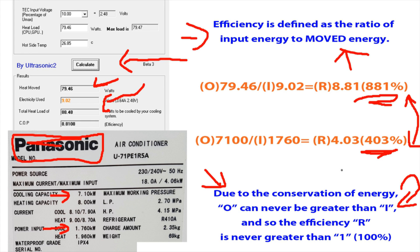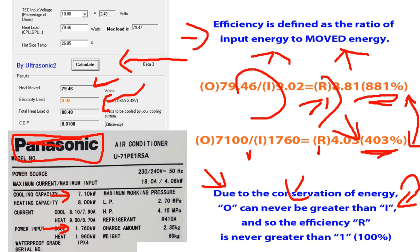We're really left with this conundrum: if conservation of energy is correct and this efficiency calculation is correct, how can these numbers be correct? This has been the big question — the meaning of TEC life. One of these has to be wrong, because they're effectively contradicting each other. This definition of efficiency comes out to be over 100, but conservation of energy says you can't have over 100 — so which one's wrong?